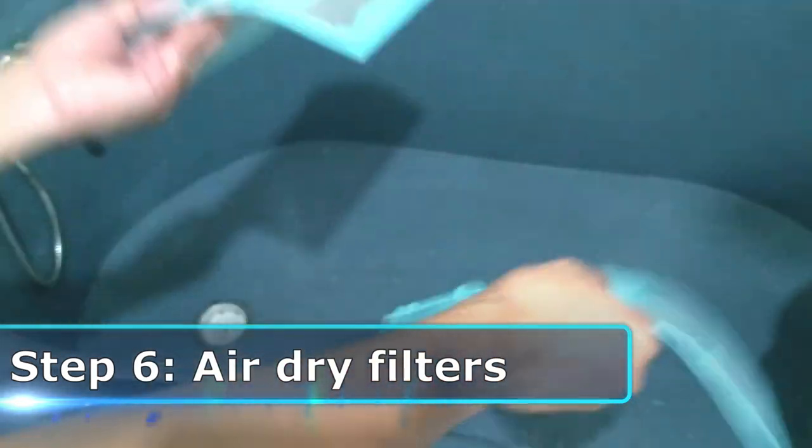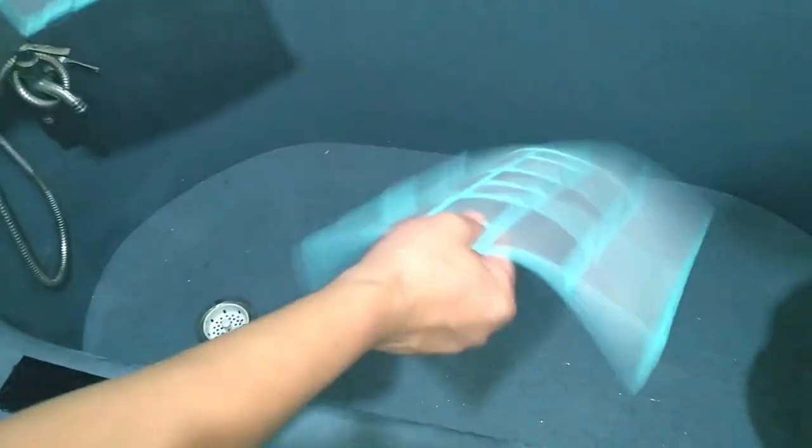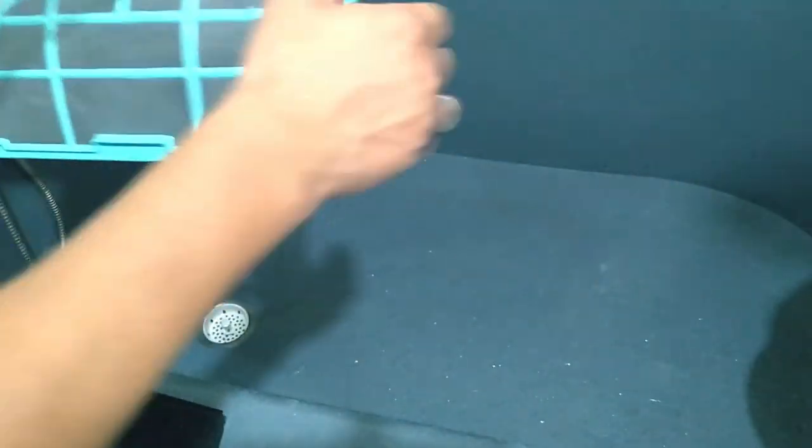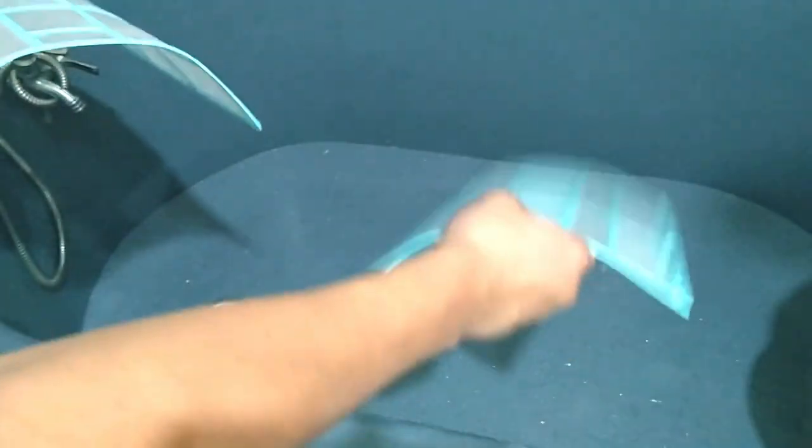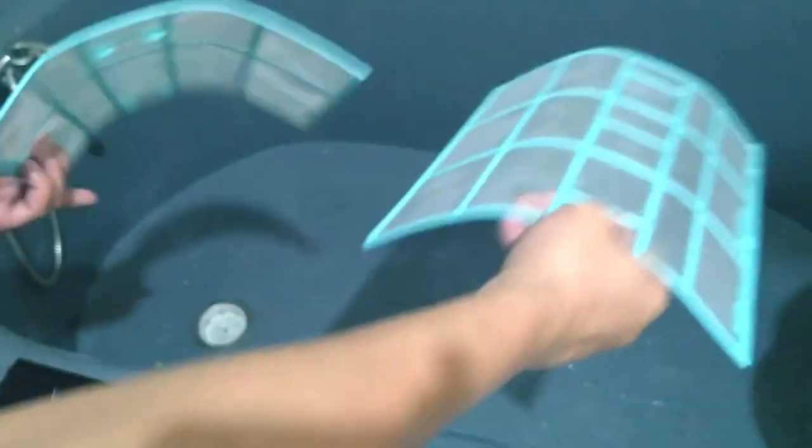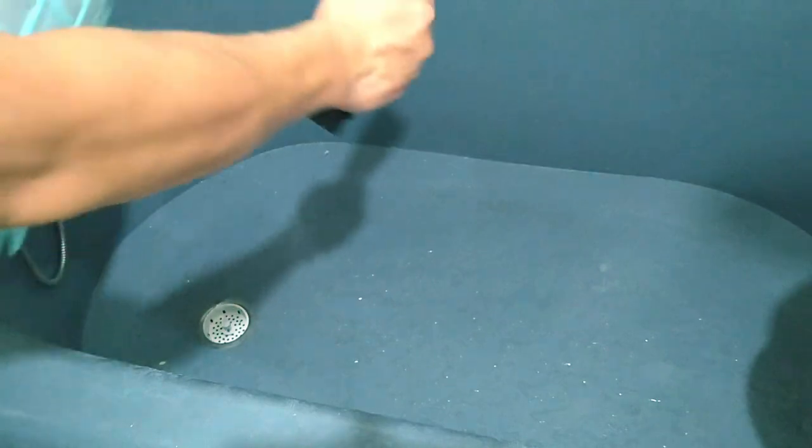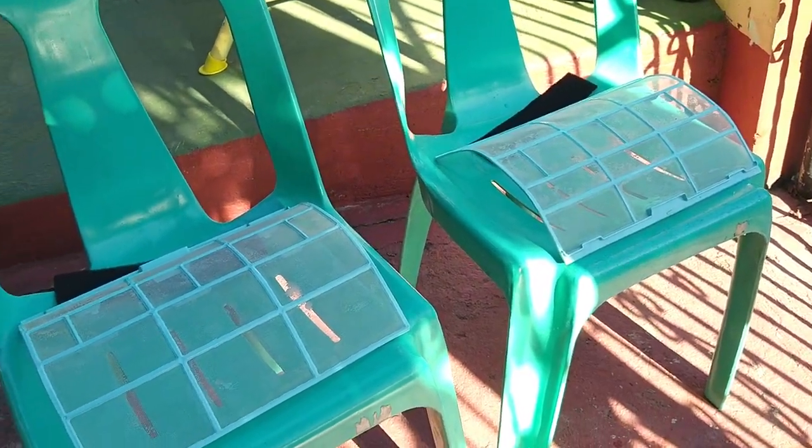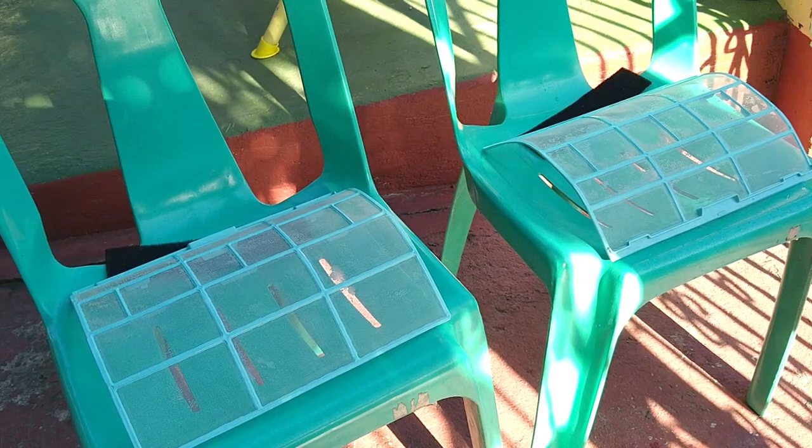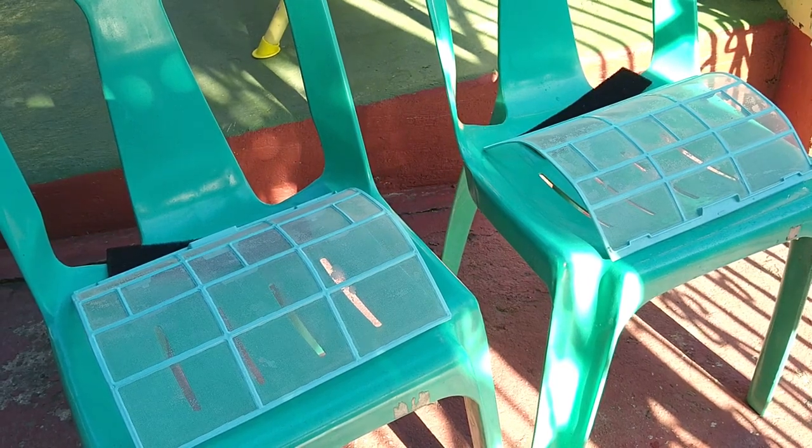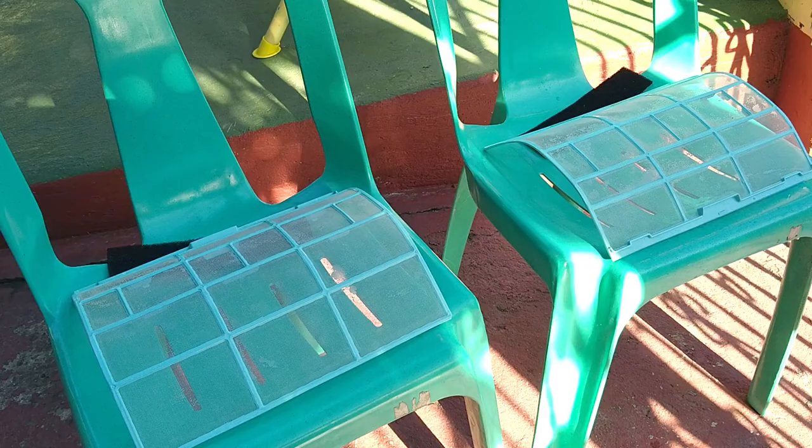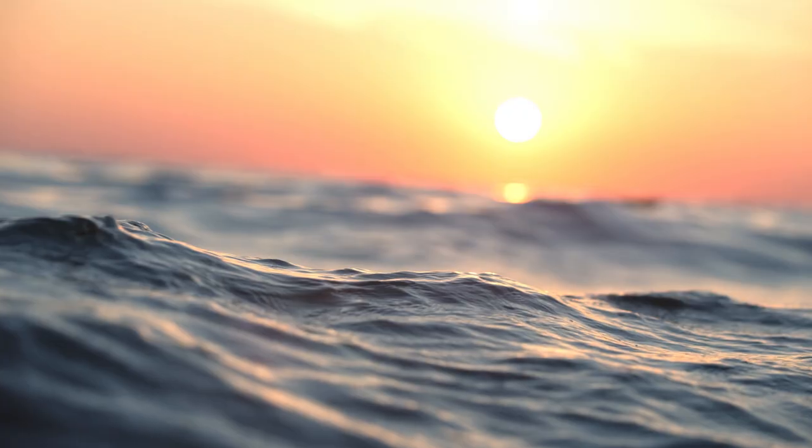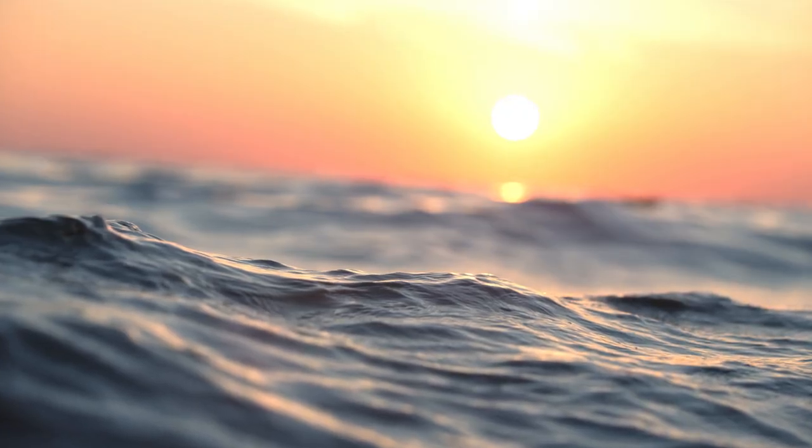Lightly tap the filters against the rim of the sink or tub to shake off excess water. And set them outdoor to air dry. I also recommend drying them under the sun to kill off harmful bacteria that might still be lurking.